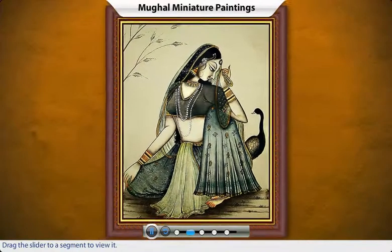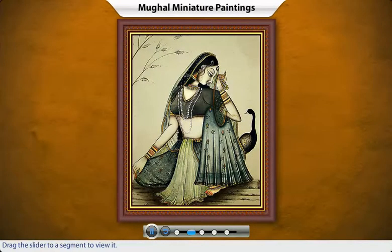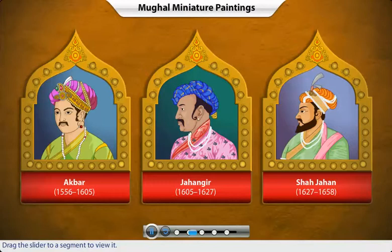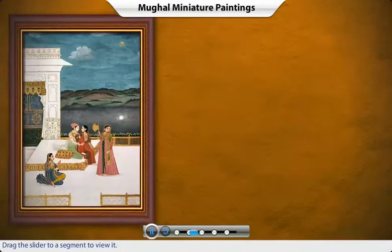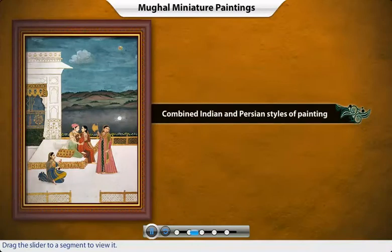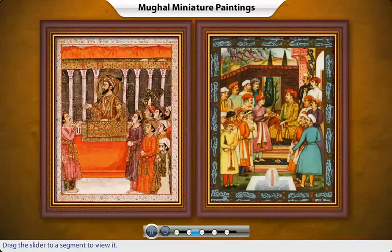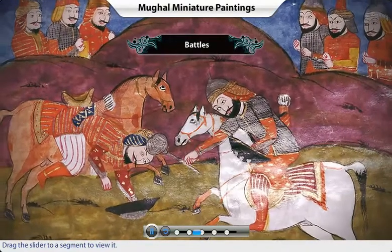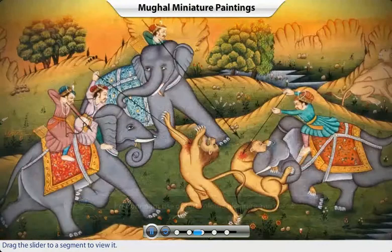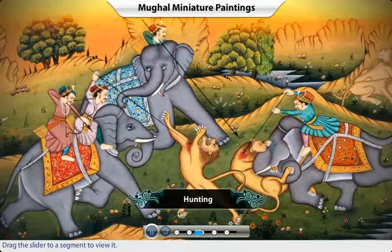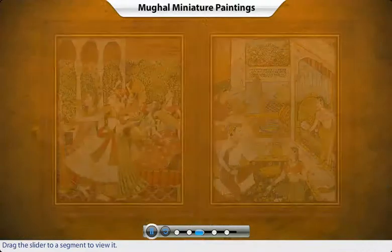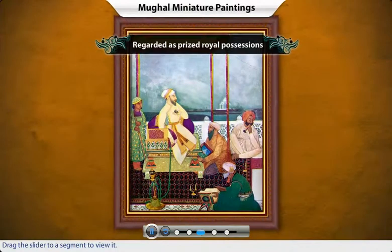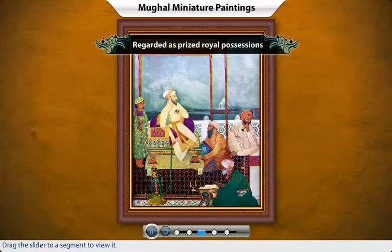Mughal rulers were admirers of miniature paintings. Mughal emperors Akbar, Jahangir and Shah Jahan particularly patronized this art form. Mughal paintings showcased a mixture of Indian and Persian styles, and focused on scenes of royal courts, battles, hunting and other aspects of royal life. These paintings were regarded as prized possessions of the emperors and were exchanged as gifts with close relations.